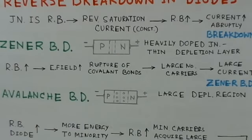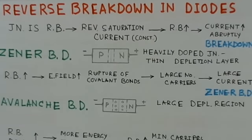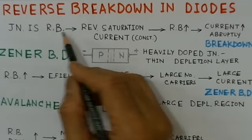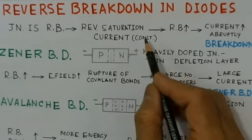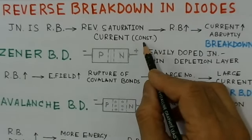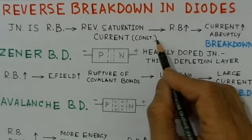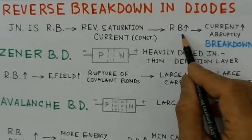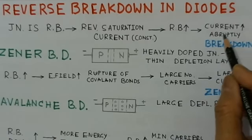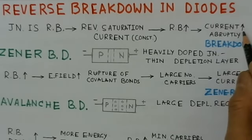We will start with reverse breakdown in diodes — what kind of reverse breakdown occurs in different types of diodes. Since reverse breakdown occurs for a reverse-biased junction, there is a reverse saturation current which flows and is mostly constant and very small. If the reverse bias is increased further, a breakdown occurs and the current suddenly increases heavily.